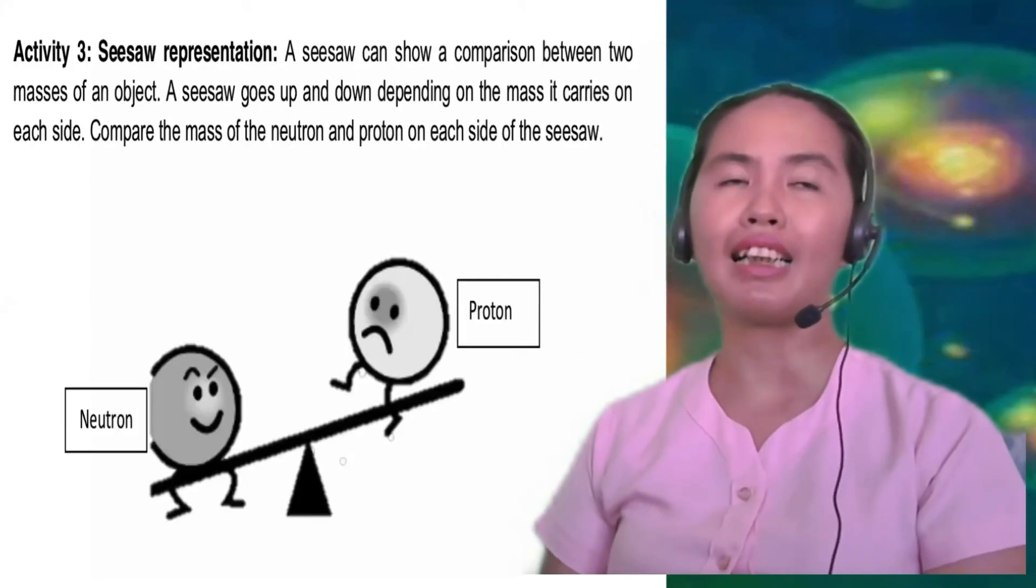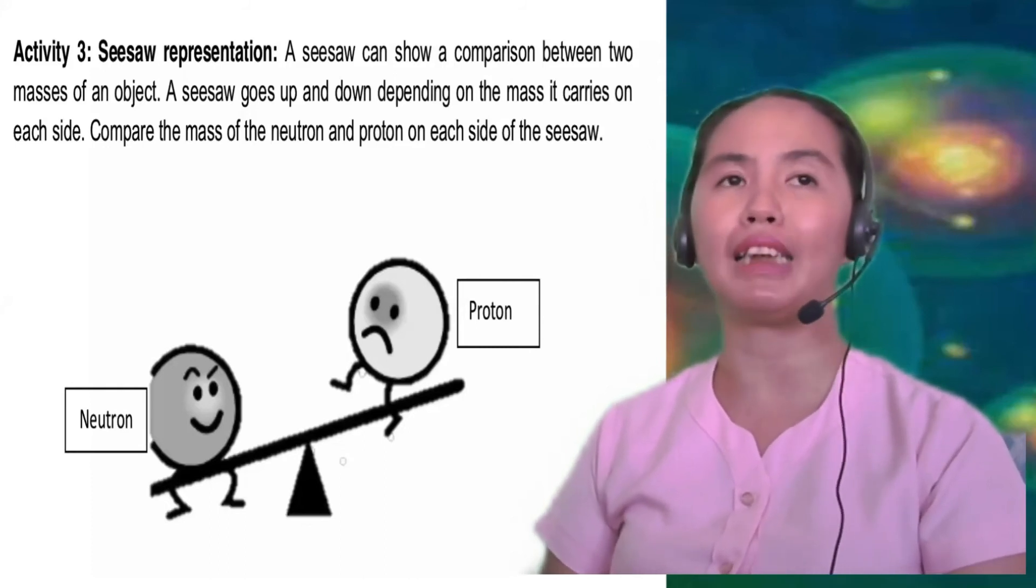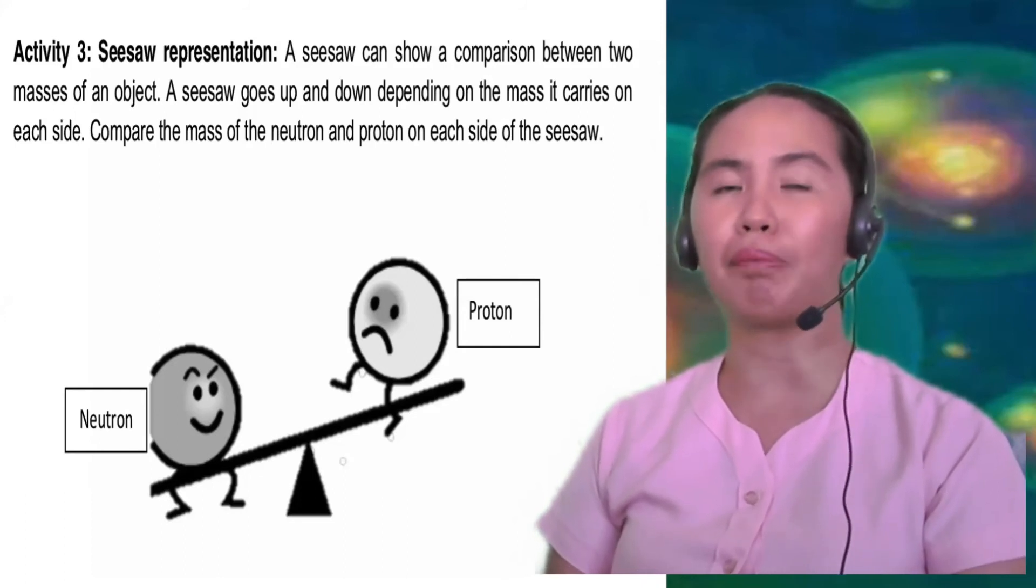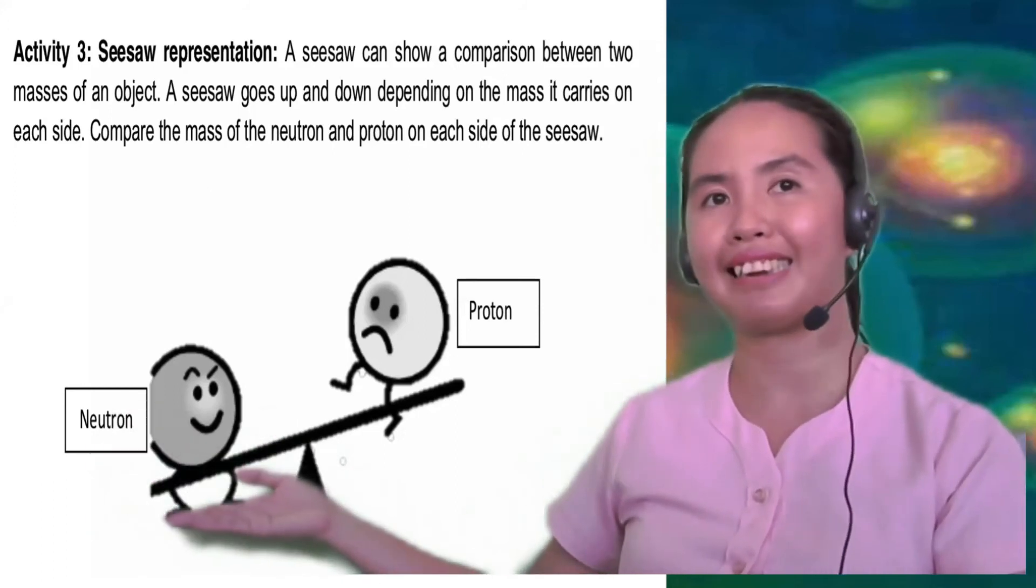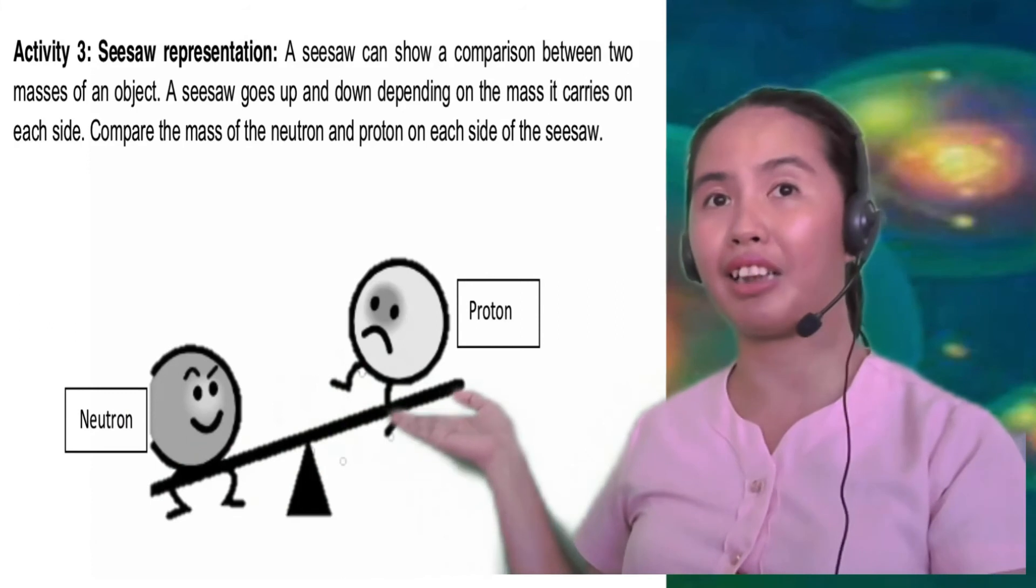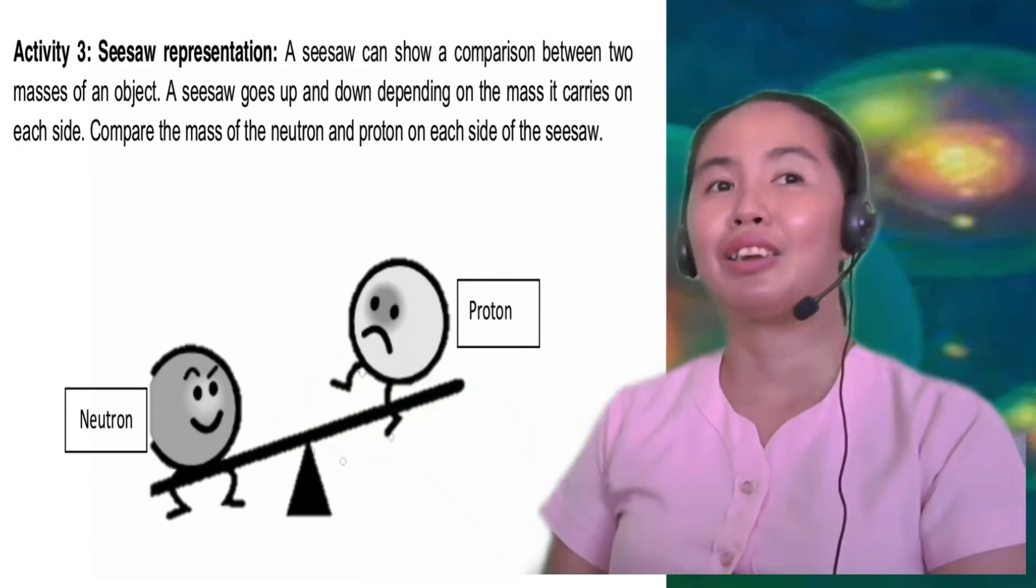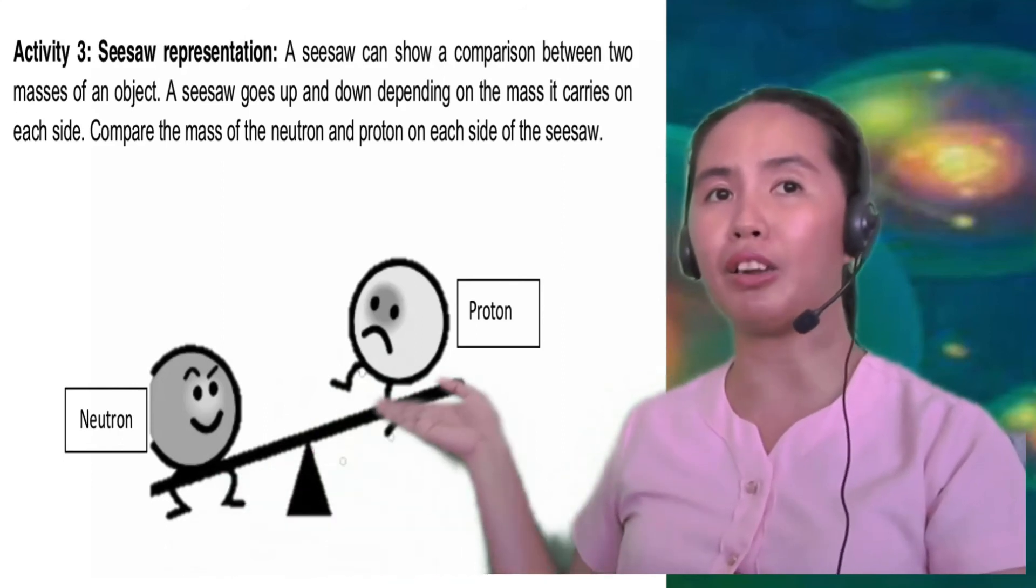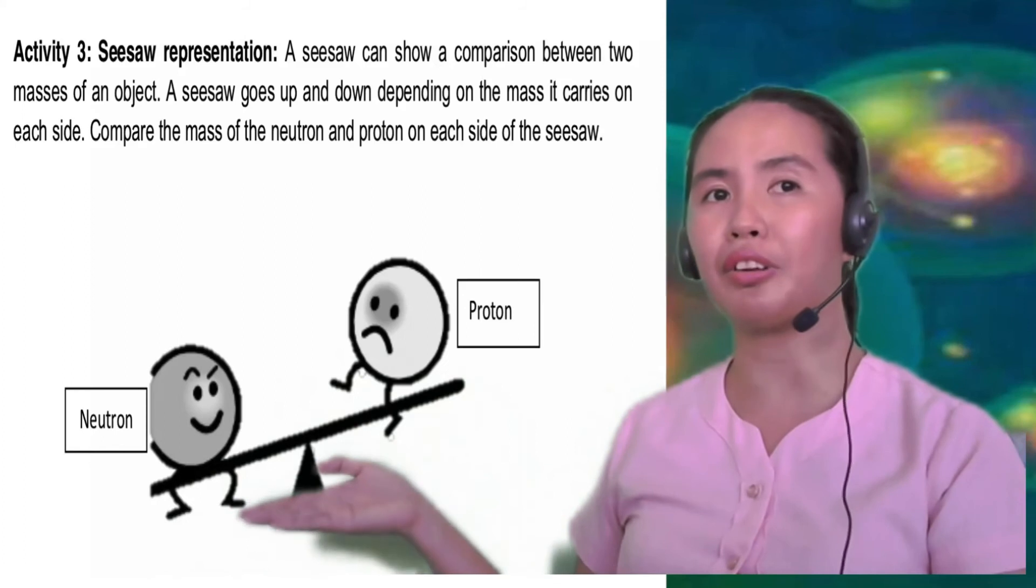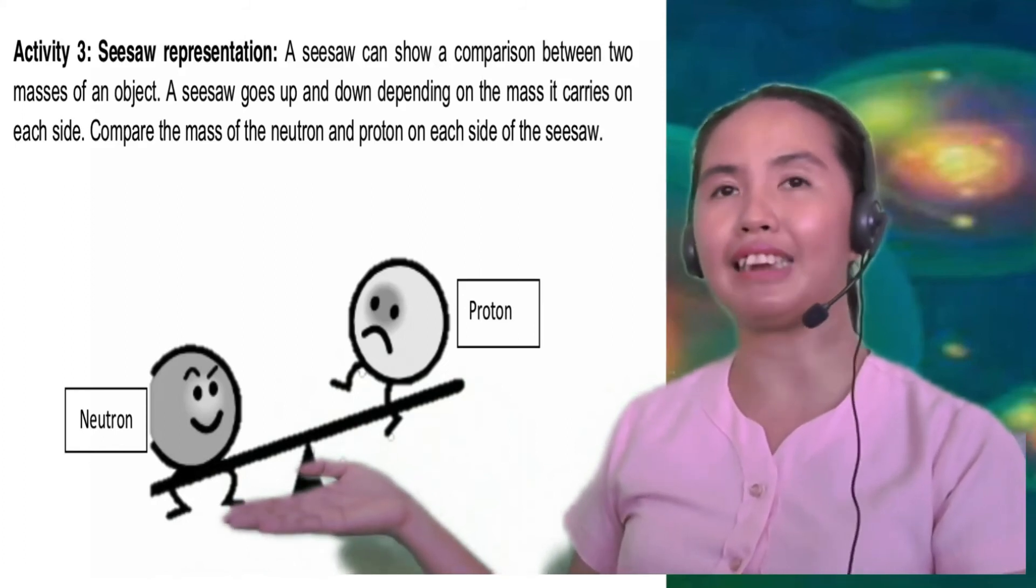For activity 3, seesaw representation. A seesaw can show a comparison between two masses of an object. A seesaw goes up and down depending on the mass it carries on each side. Compare the mass of the neutron and proton on each side of the seesaw. We have here the neutron while we have here the proton. So, which do you think is heavier? Is it the neutron or the proton? Why do you think neutron is on the lower side of the seesaw?